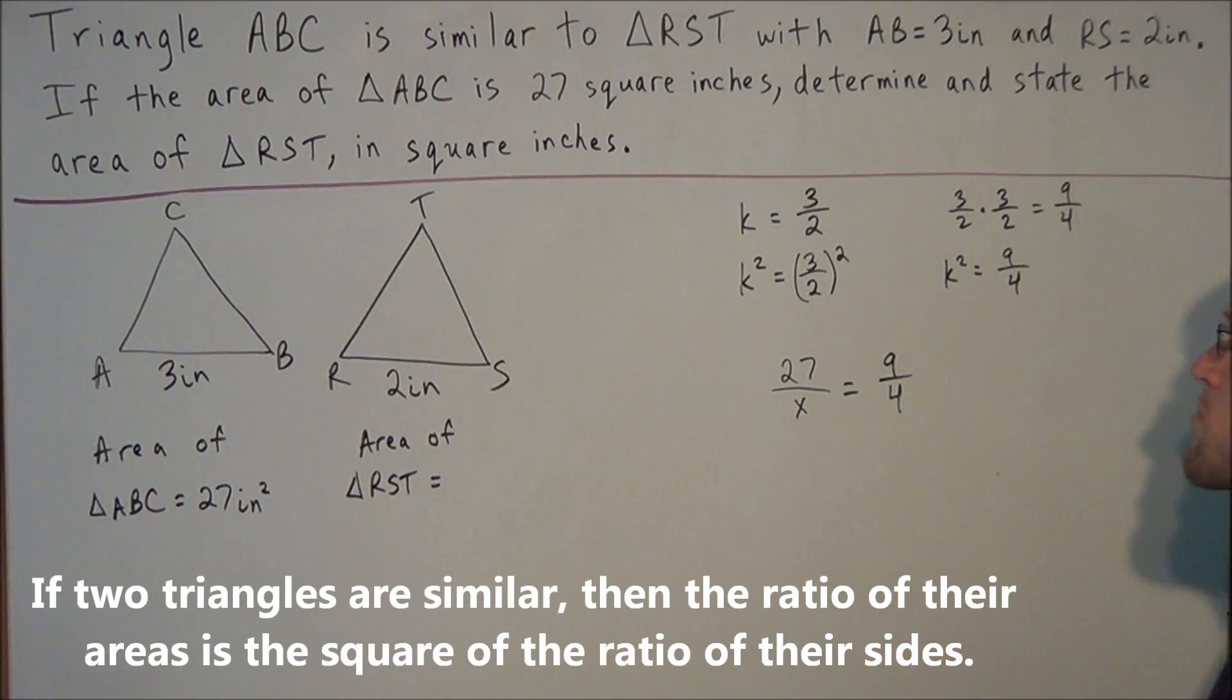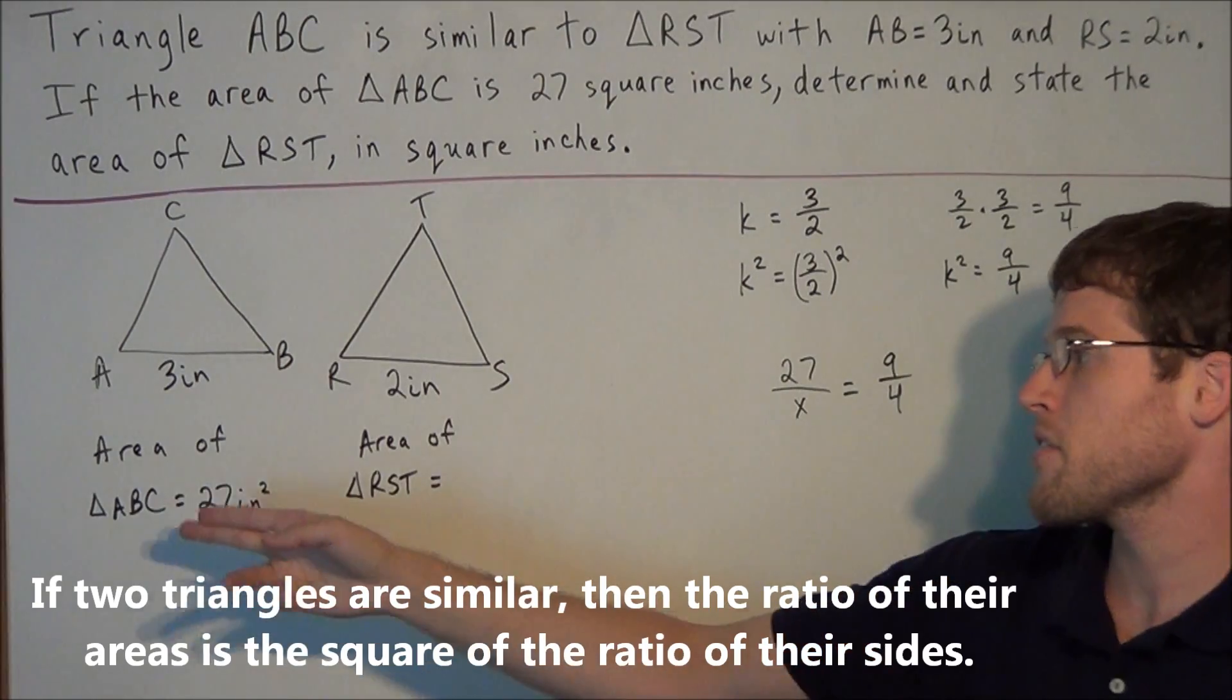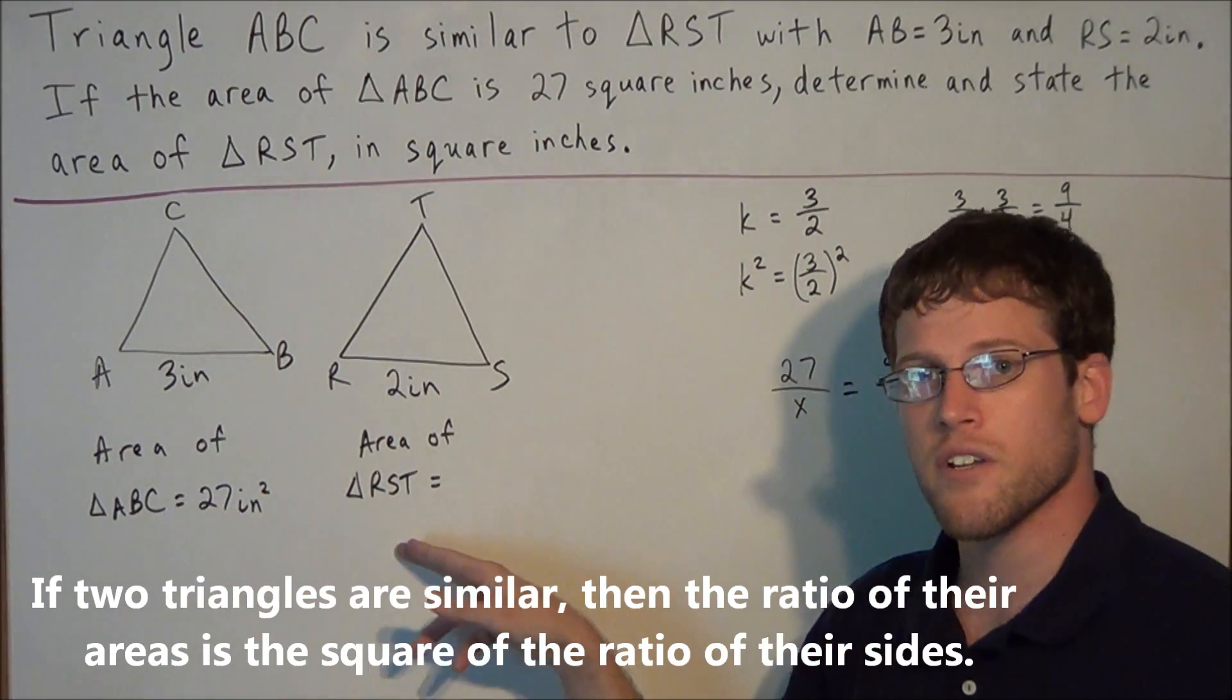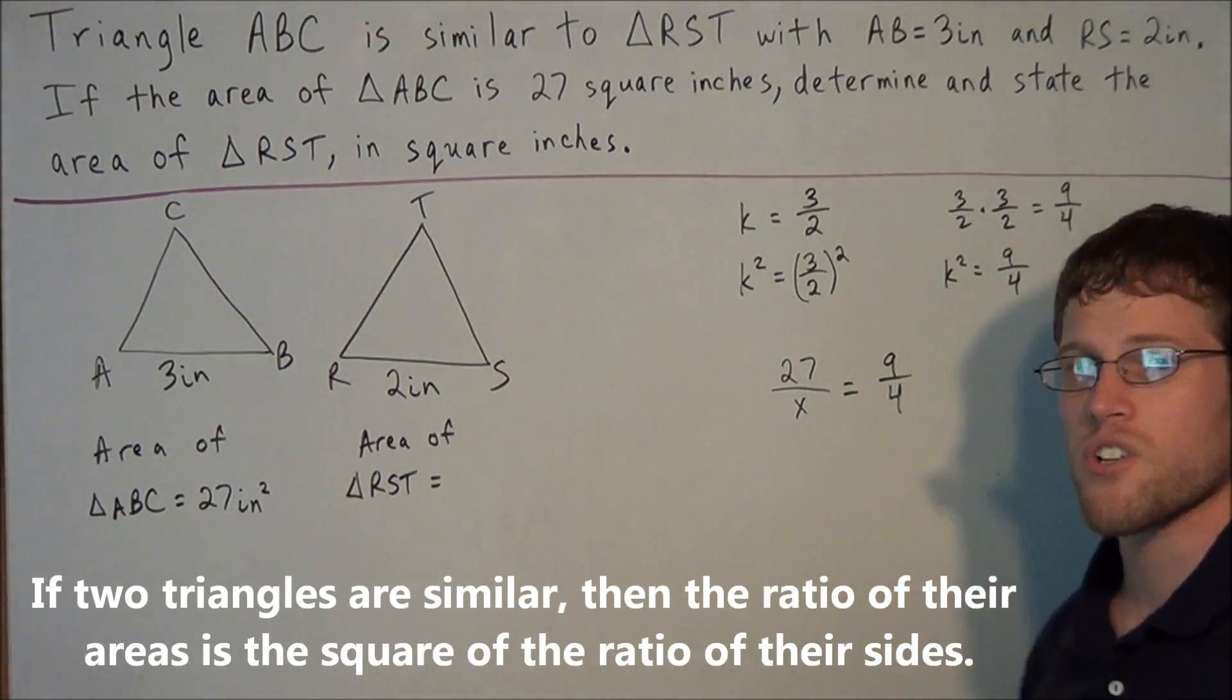And we're going to set this equal to 9 over 4. So the way that this problem started, we compared the bigger triangle to the smaller triangle, 3 over 2. So we're going to compare the area of the bigger triangle to the area of the smaller triangle. That way our ratios match up, and we set up the proportion correctly.